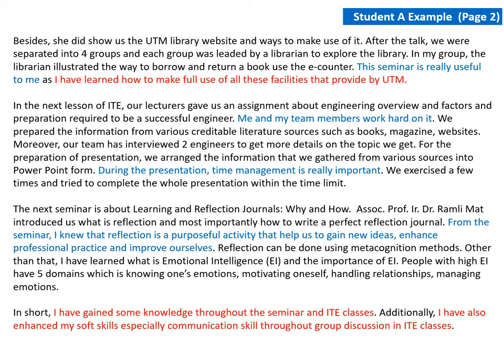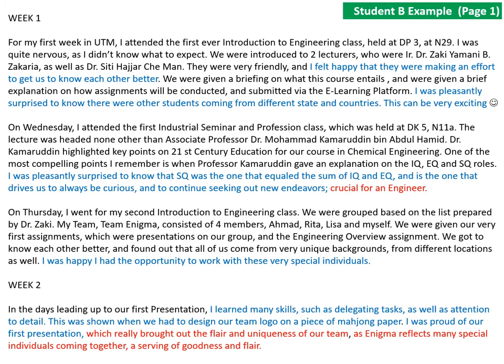Try to identify which is the content, which is the analysis, which is the reflective thinking, and so on. Pause this video and try to understand. Now I'm showing Student B's example — this is page number one. We can see that there are a lot of content in black text. In the first paragraph there's some analysis made by the student. In the second paragraph there's still a lot of content and some analysis, and then the student makes a little bit of reflective thinking that states 'This is crucial for an engineer.' In the final paragraph there's a mix of content, analysis, and reflective thinking.